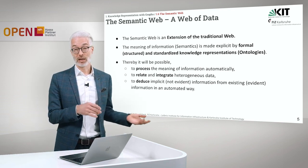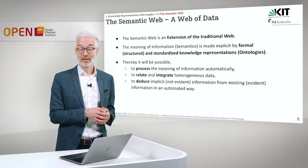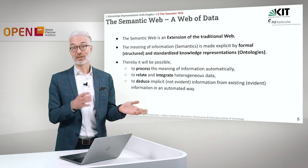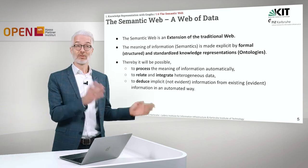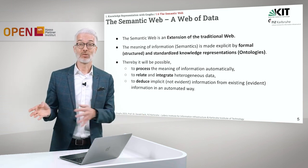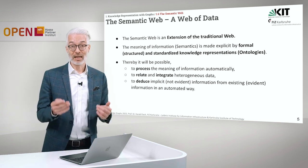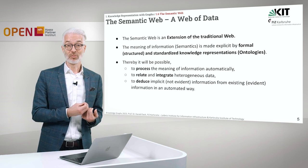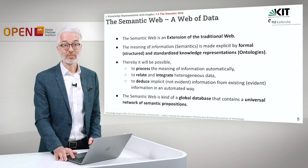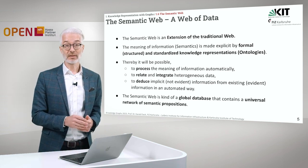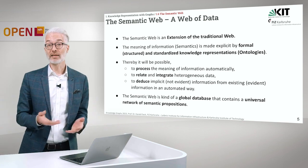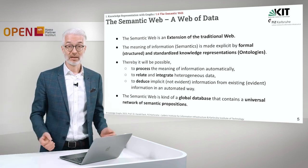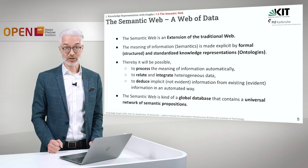It will also be possible to deduce implicit, non-evident information from existing information in an automated way. For example, we deduced that Sir Alec Guinness is not only a person, but since a person is a subclass of creature, Sir Alec Guinness is also a kind of creature. This kind of deduction will be made possible. In the end, the semantic web is a global database containing a universal network of semantic propositions — a so-called web of data.